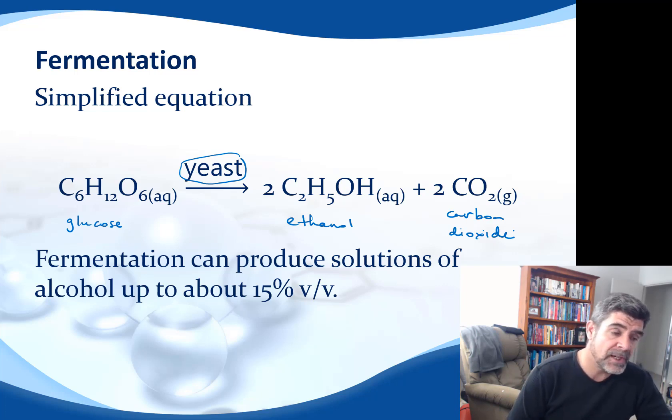One of the problems with the fermentation process is that it can only produce solutions up to around about 15% ethanol by volume. Much more than that, and the concentration is too high for the yeast to survive, and so therefore they will die or stop reproducing at that point. So we get a maximum of 15% alcohol in a fermentation vat.